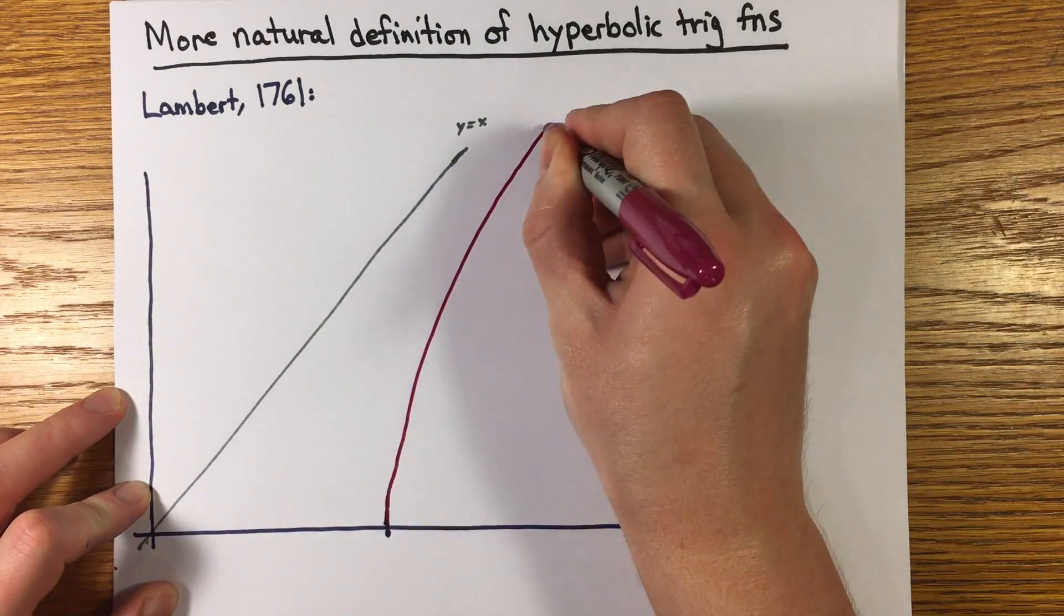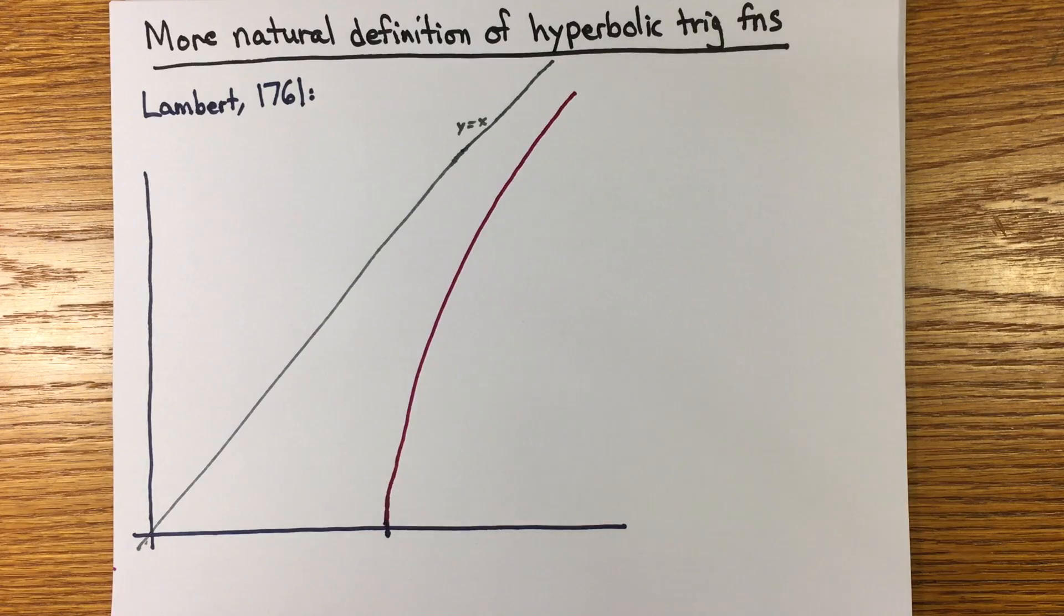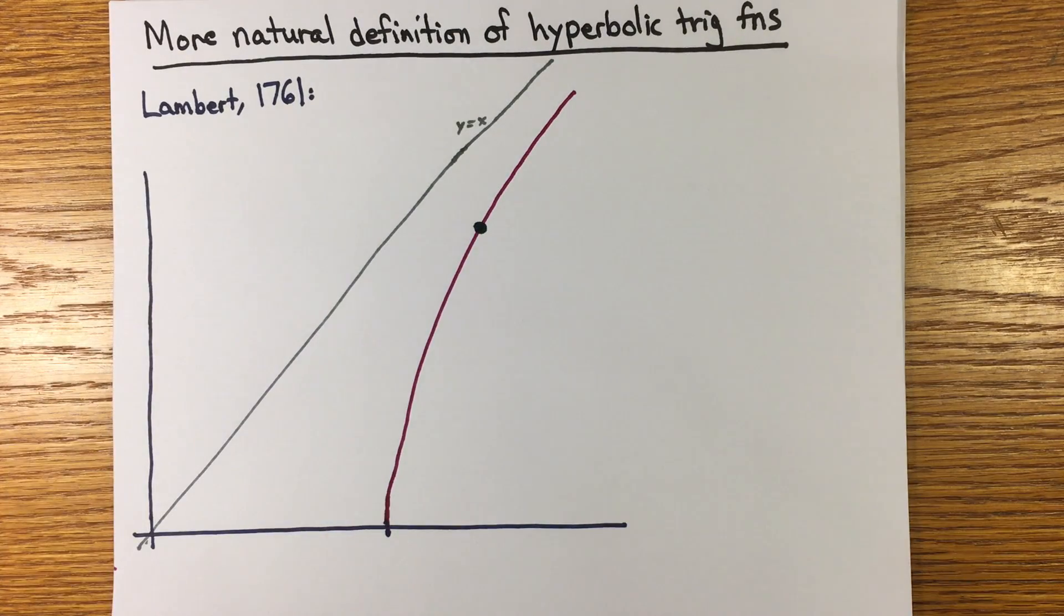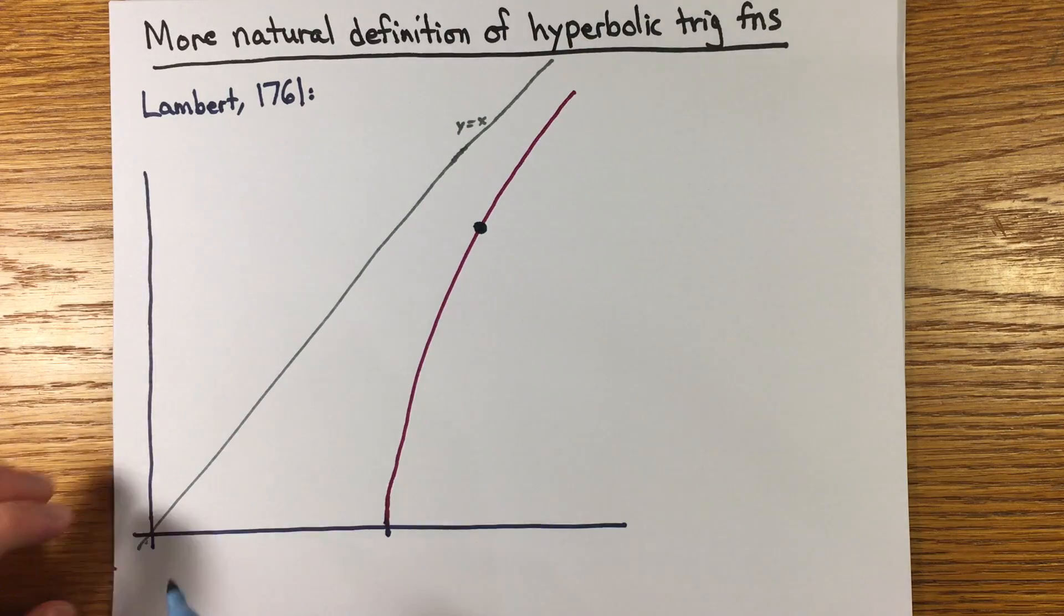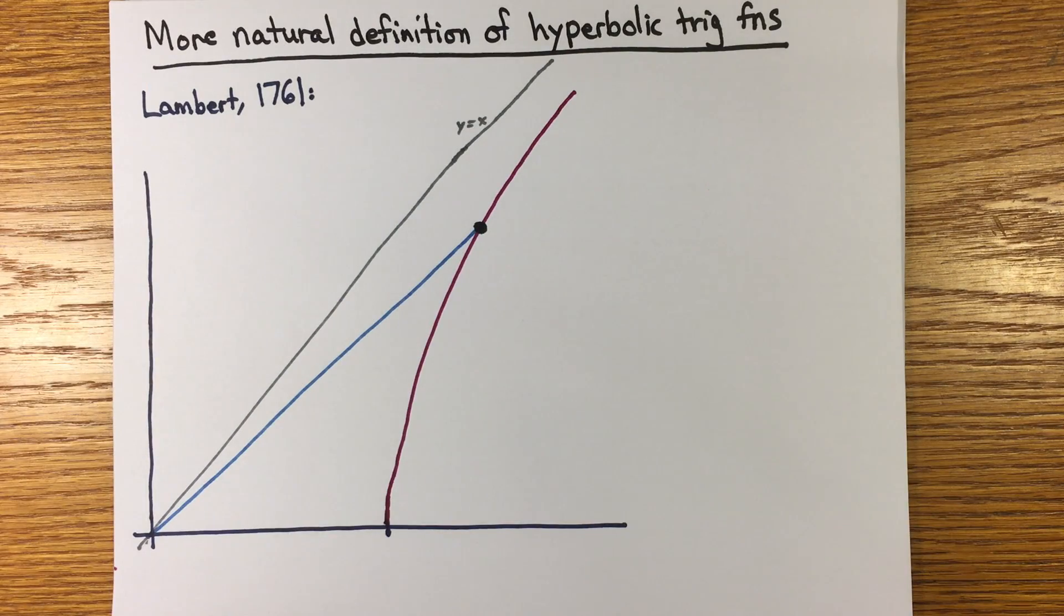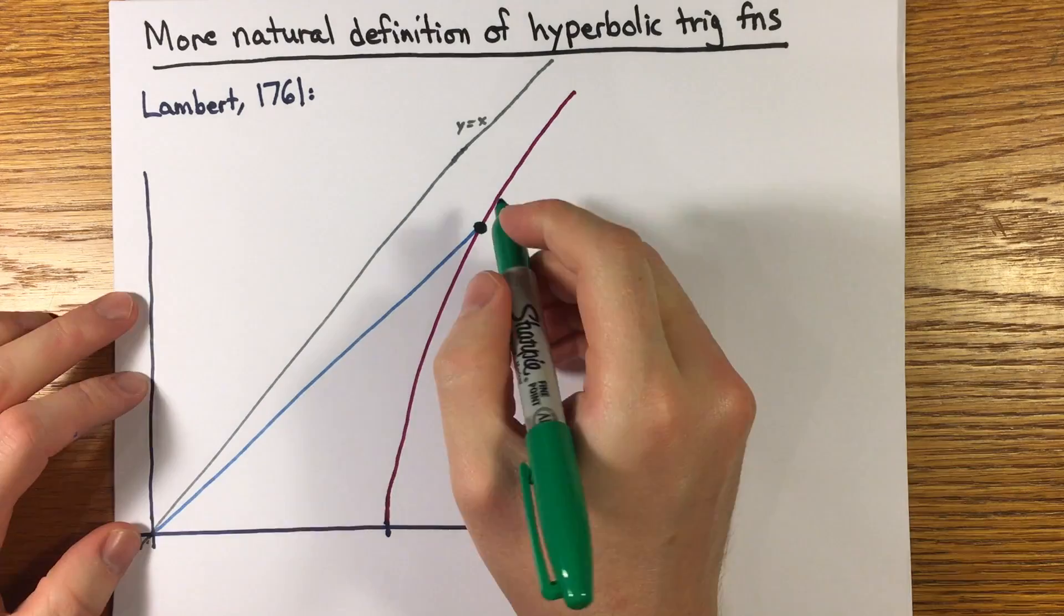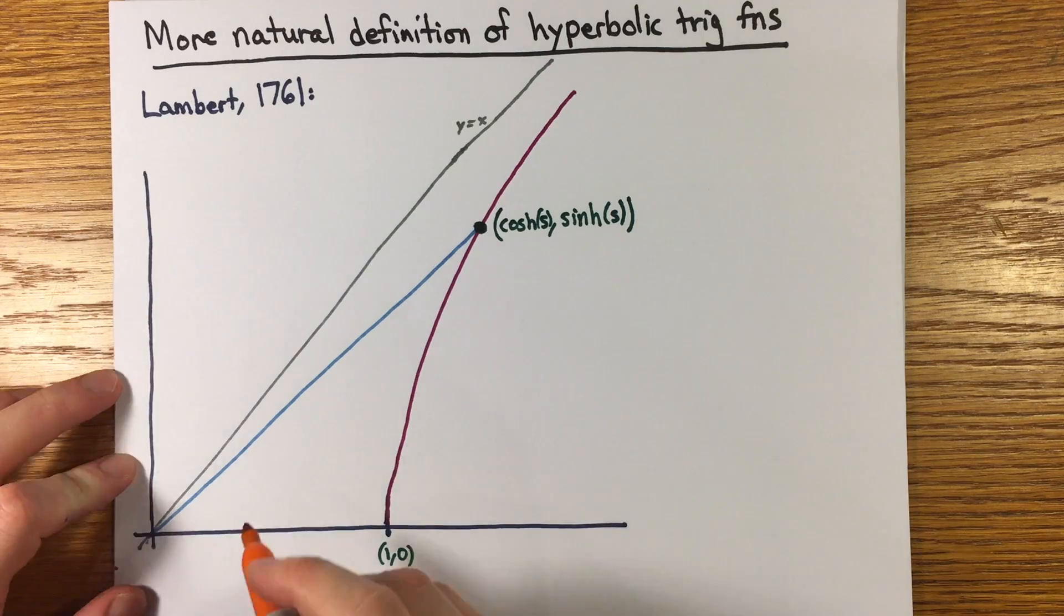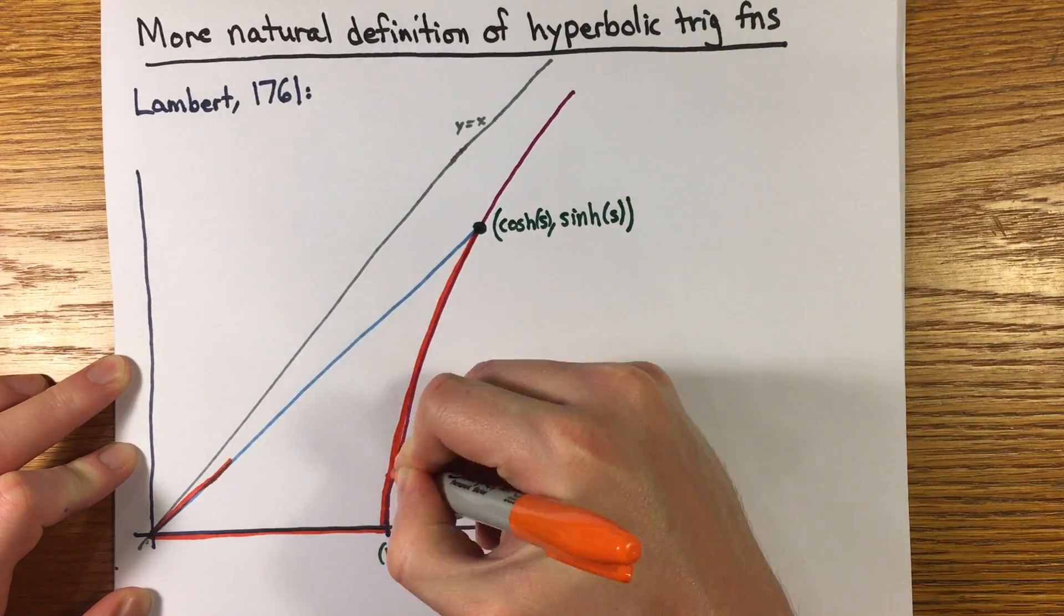It turns out that the functions of interest to us on the hyperbola are the ones that parameterize the hyperbola by half the area of the region between the x-axis, the curved segment along the hyperbola, and the line between the terminating point and the origin called the hyperbolic sector. For points with negative y-coordinate, the area of the sector is considered negative. Here's a subtle point.